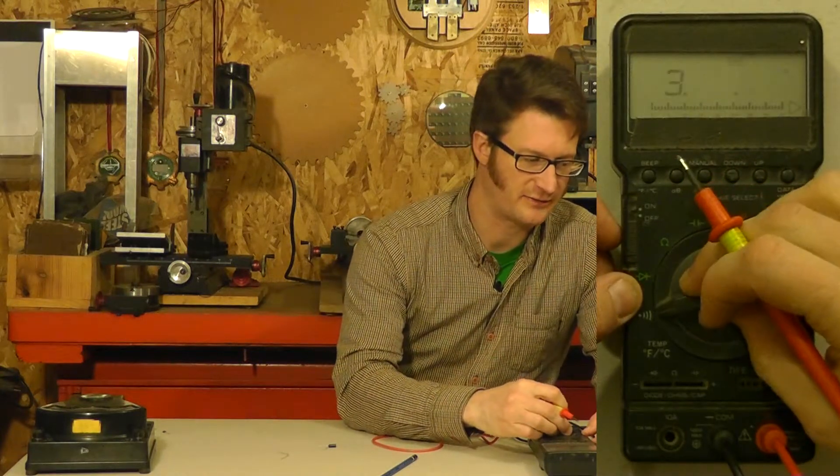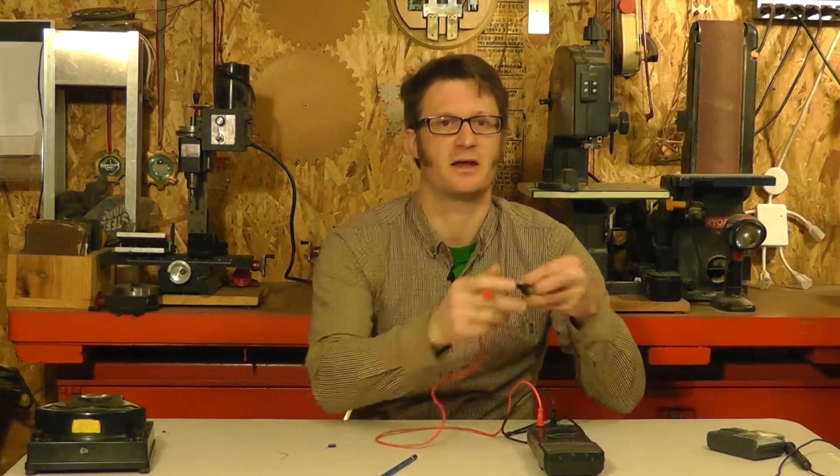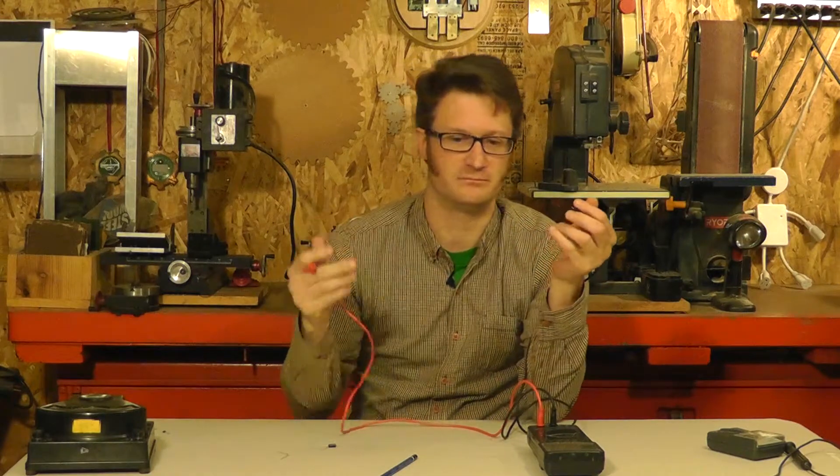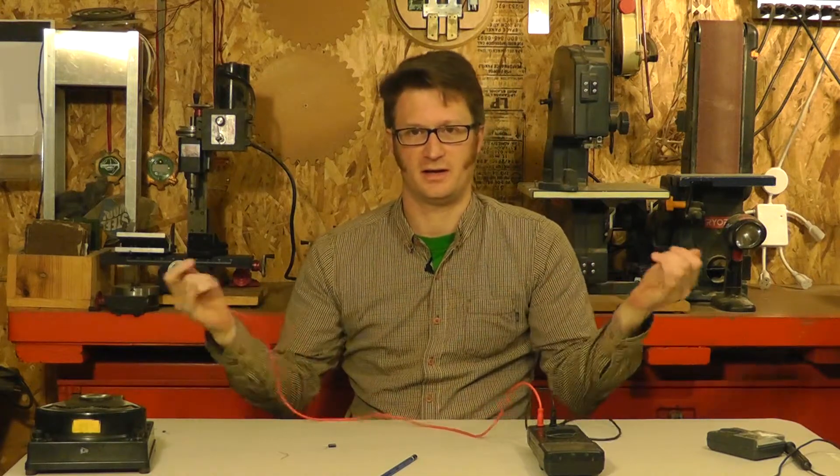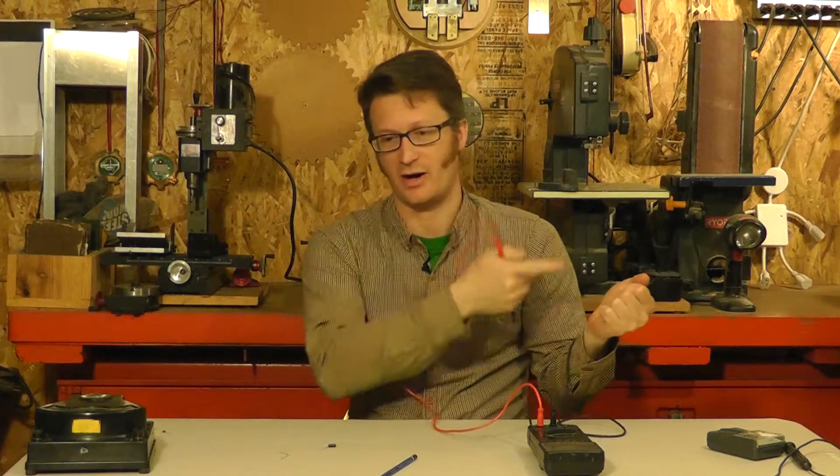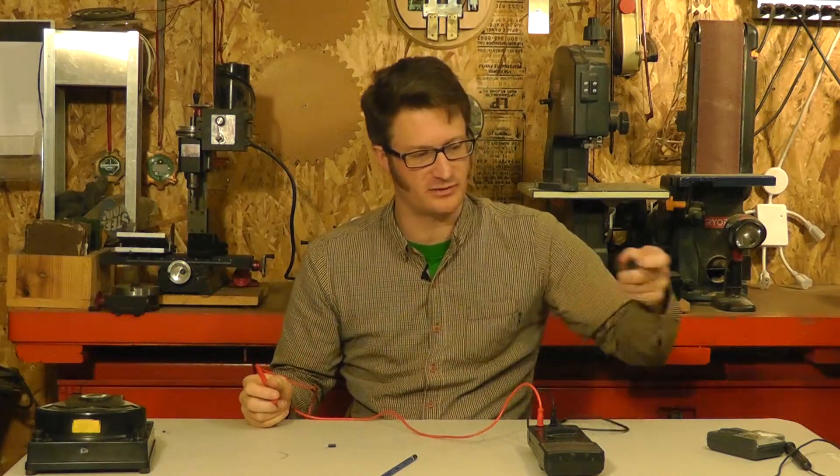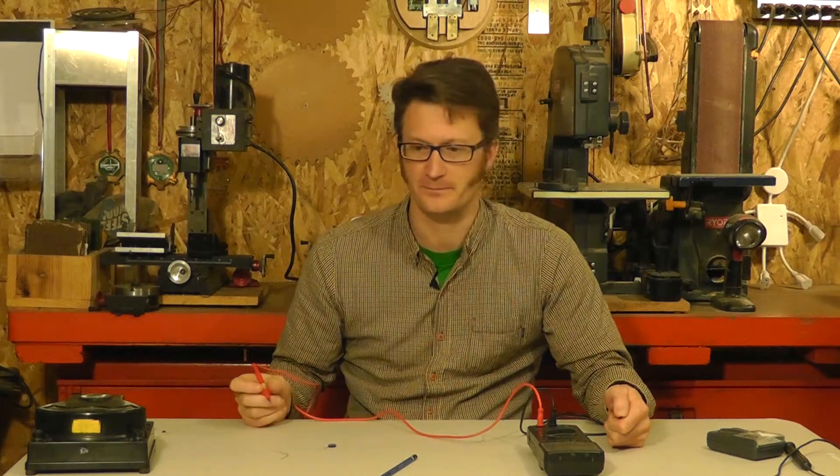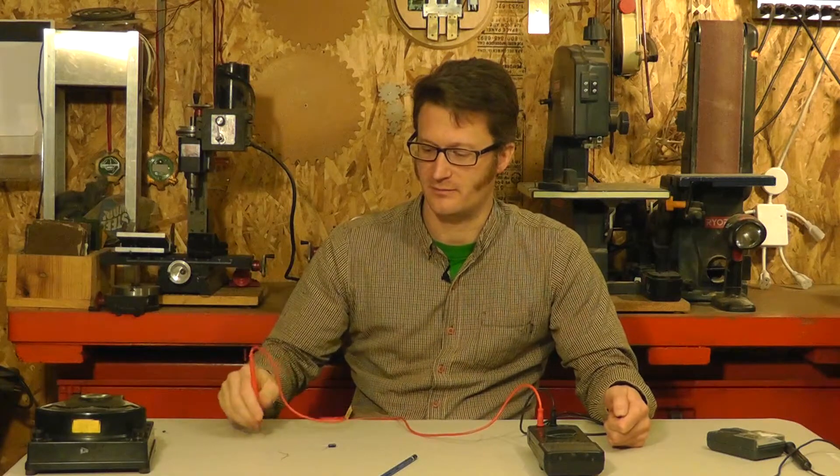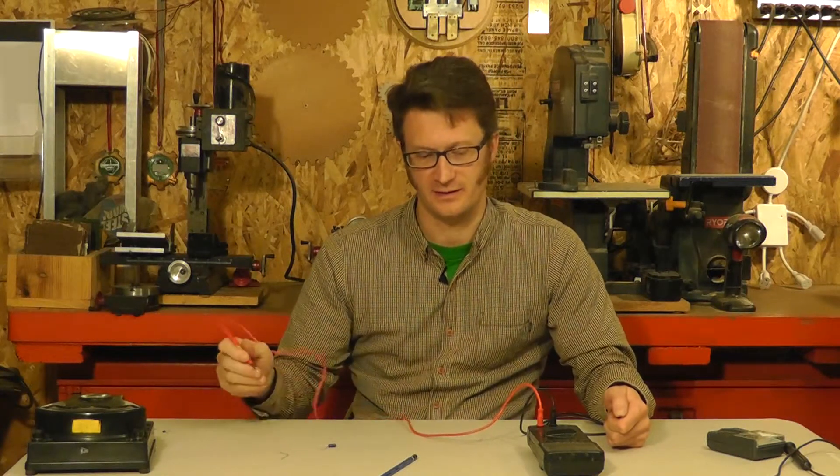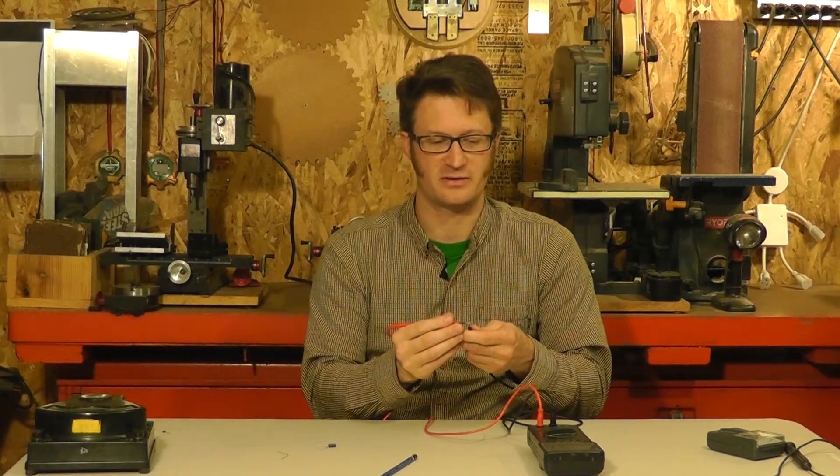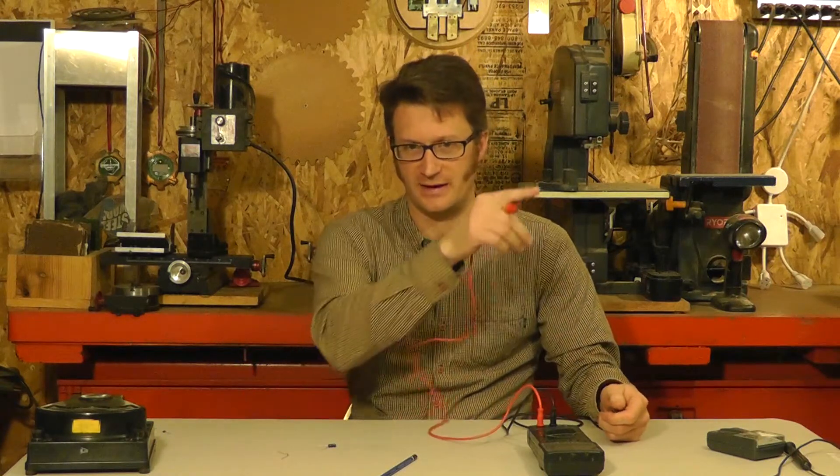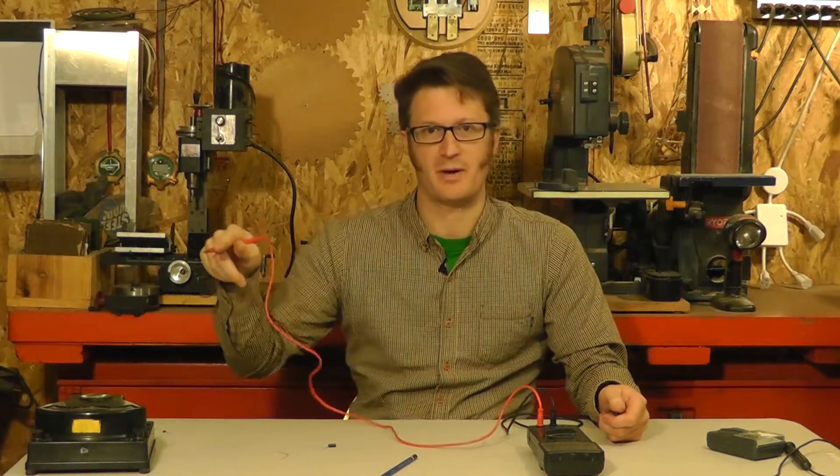Continuity check is a very common thing to find on many multimeters. And what continuity check allows you to do is, let's say you have a bundle of wires, and you have two ends and you don't know which wire connects to which wire. So what you can do is you can touch one probe to one end of the wire, and then you can poke around through all the other wires in the other end until it beeps. And so once you hear a beeping, that means that you have detected that there is a circuit path through whatever you're probing around in.